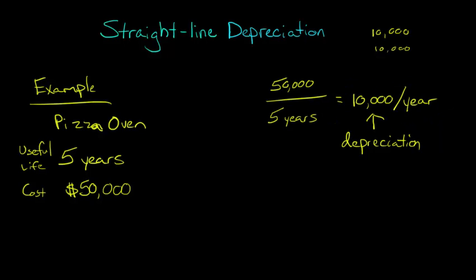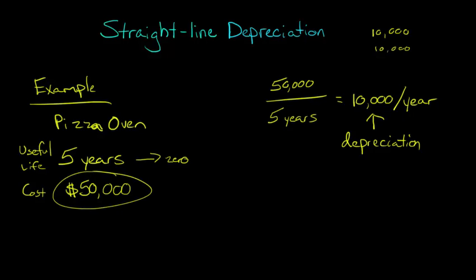Now we're assuming here that this asset would be worth zero at the end of five years — we'll talk about a case where that wouldn't be the case in a moment. But for right now, we're taking this depreciation and spreading the cost of this asset, the $50,000, across this five-year period evenly. So each year gets $10,000 of depreciation — $10,000 of the cost of that asset.